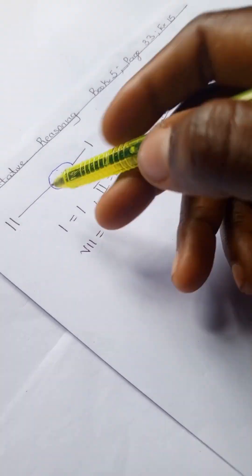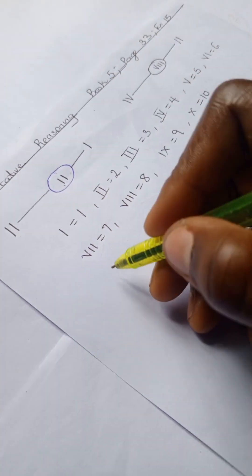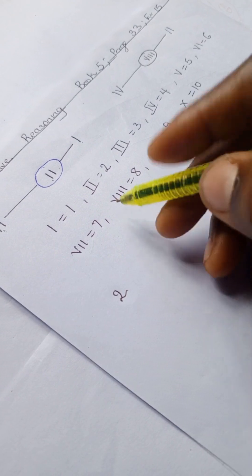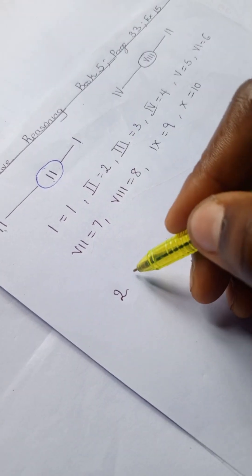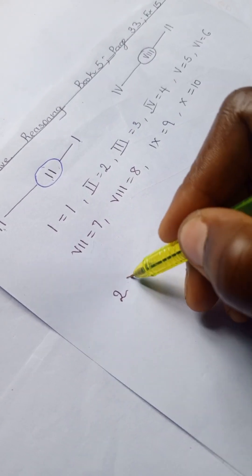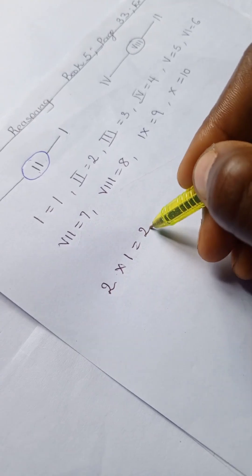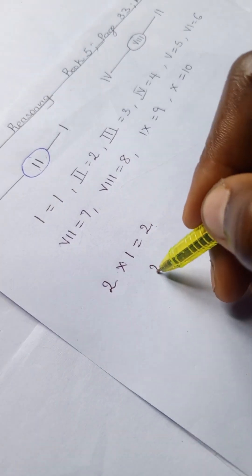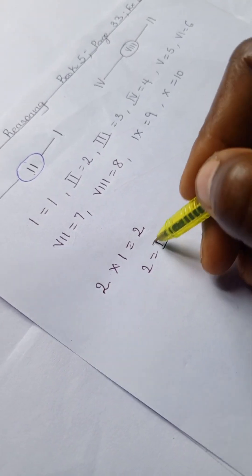Now for this, we have II and I. Our II here is two, I is one, so we're going to have two times one equals two. What is the Roman numeral for two? It's also II, so that's why we have our II here.